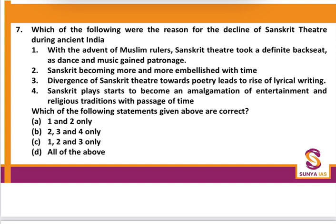Which of the following were reasons for the decline of Sanskrit theatre? Sanskrit theatre was popular during the Gupta period, but with the advent of Muslims, it took a definite backseat as their dance and music gained patronage. Sanskrit becoming more embellished over time and its divergence towards poetry led to the rise of lyrical writing. Statement 4 — plays becoming an amalgamation of entertainment and religion — was actually a reason for its popularity, not decline. So statements 1, 2, and 3 are correct.